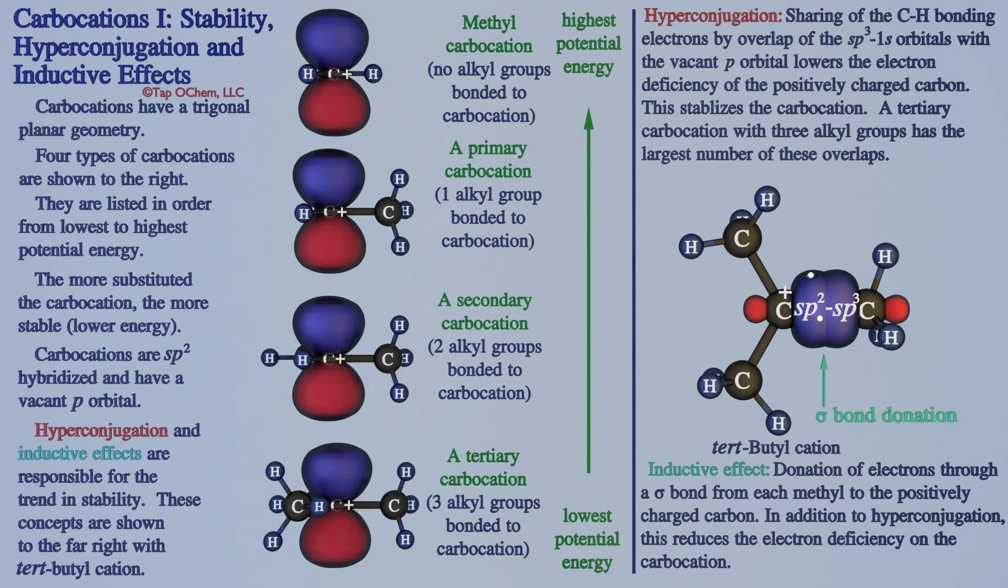For a tertiary carbocation, there are three sigma bonds that can donate electron density, thus making it the lowest energy carbocation of this series.